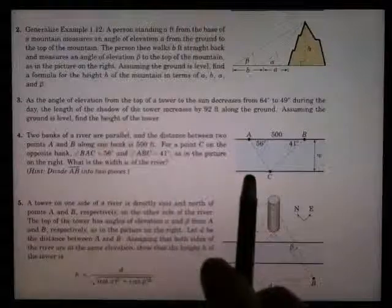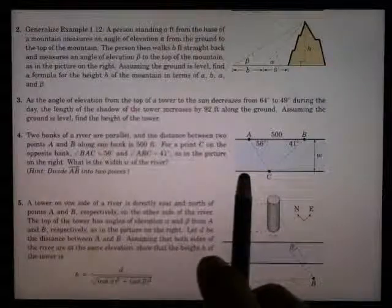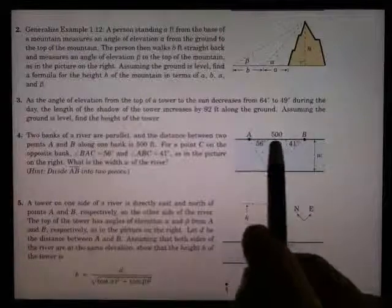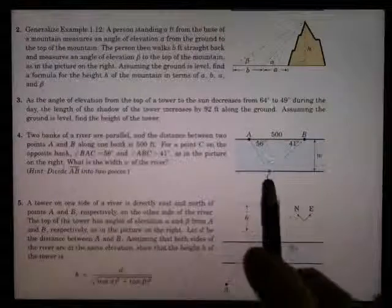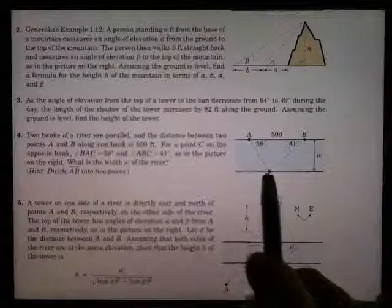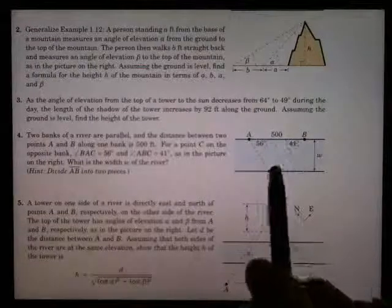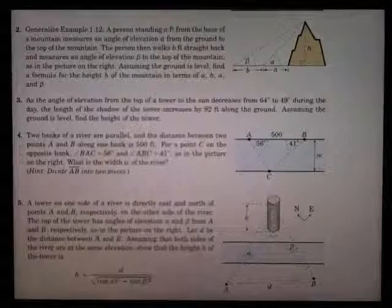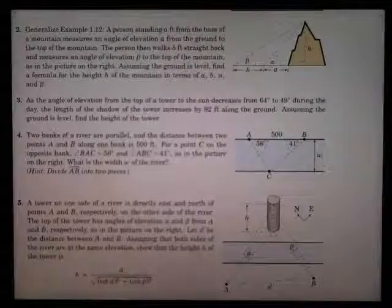Referring to this picture right there. Two banks of a river are parallel, and the distance between the two points A and B along one bank is 500 feet. For a point C on the opposite bank, they measure the angles. BAC is 56 degrees and ABC is 41 degrees. What is the width of the river?